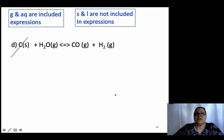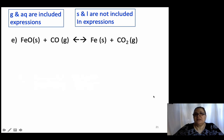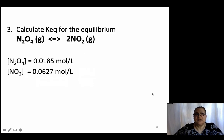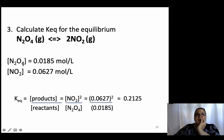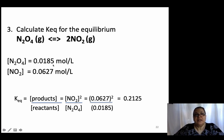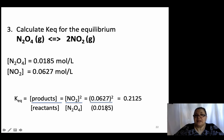Let's calculate the equilibrium constant for this reaction. They're all gases, so they're all included in the expression. The concentration of N₂O₄ is 0.0185 and the concentration of NO₂ is 0.0627. Write the expression, raise NO₂ to the coefficient (squared), plug in the values: 0.0627 squared divided by 0.0185, and calculate the answer.